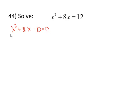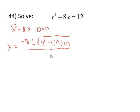So at this point I can go to the quadratic formula with a equaling 1, b being positive 8, and c as negative 12. Going to the quadratic formula, it's the opposite of b, so that's -8, plus or minus the square root, b² is 8², minus 4ac, that's 4 times 1 times -12, all divided by 2a, which is 2 times 1.